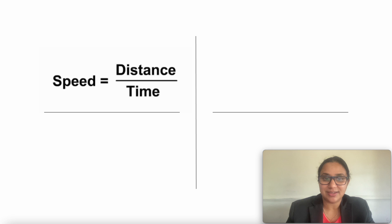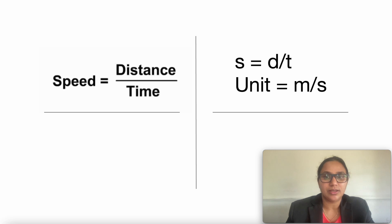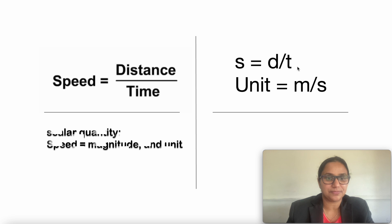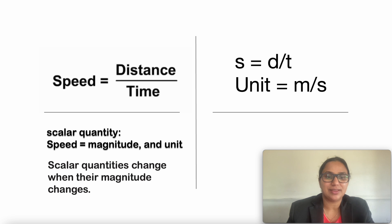The speed formula is: speed (S) equals distance (d) divided by time (t), and the unit is meter per second. Speed is a scalar quantity — it has only magnitude and a unit. Scalar quantities change when their magnitude changes.